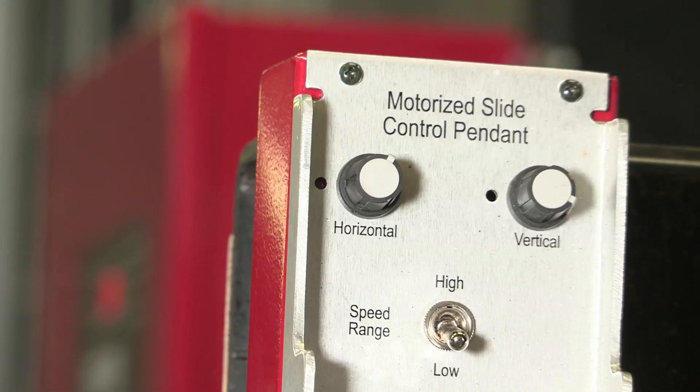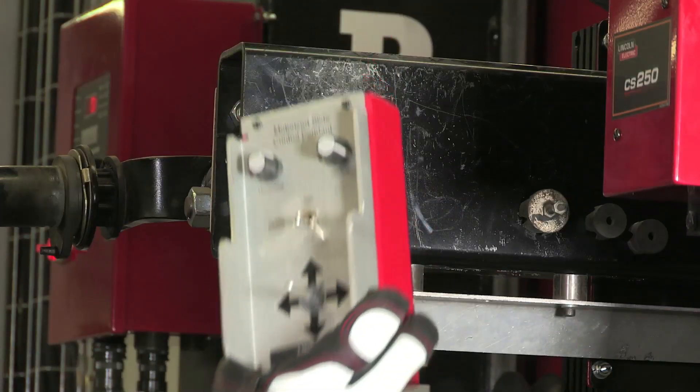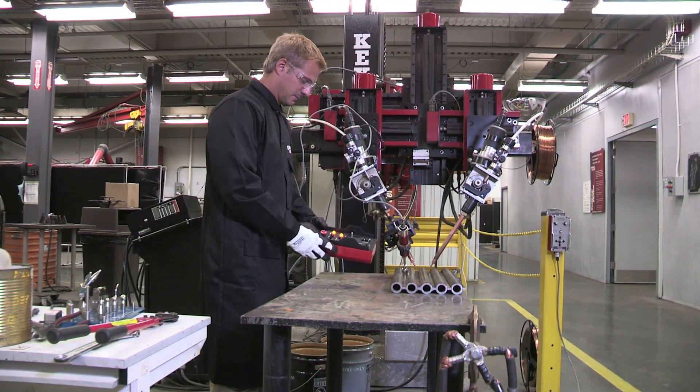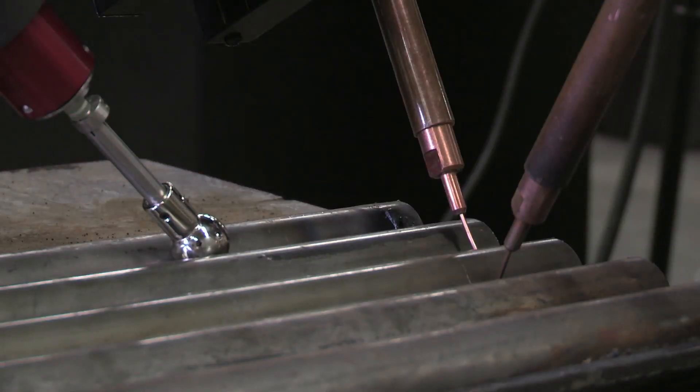If you initially selected the motorized slide control system, then you're ready to weld. If you chose the seam tracker system, your third and final step is to select the seam sensor tip for your application.